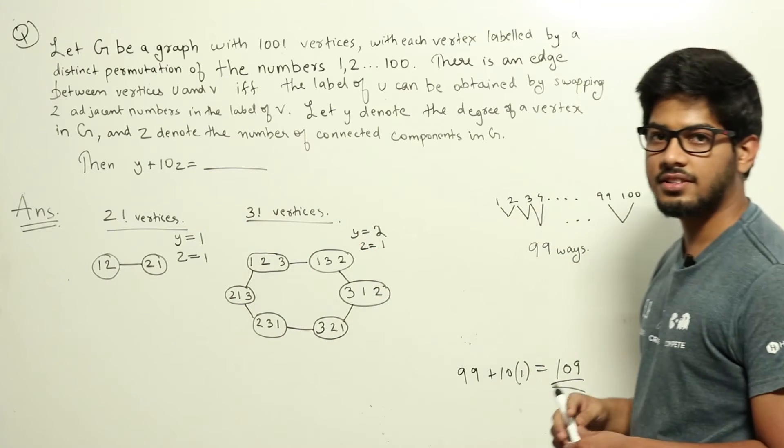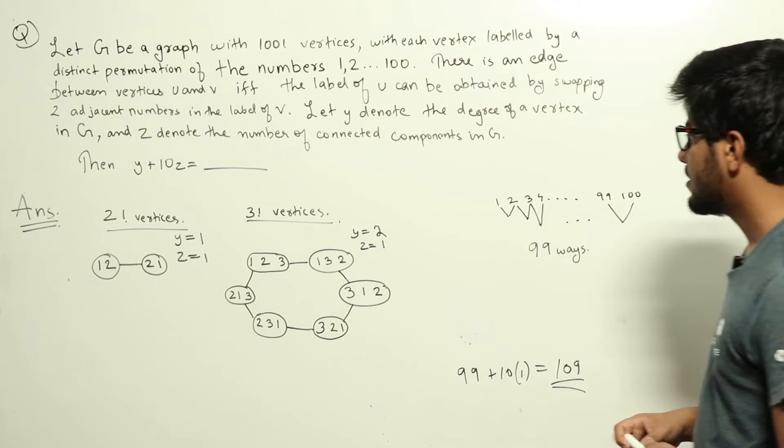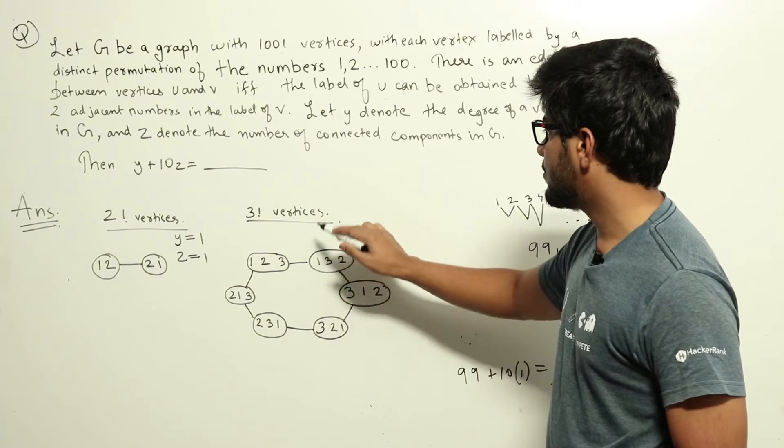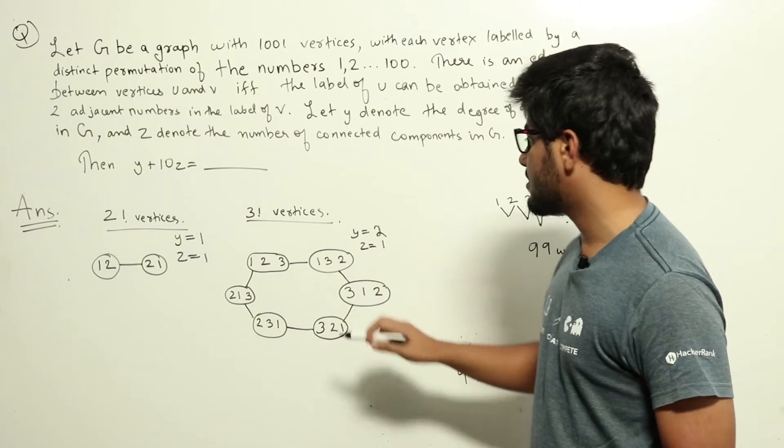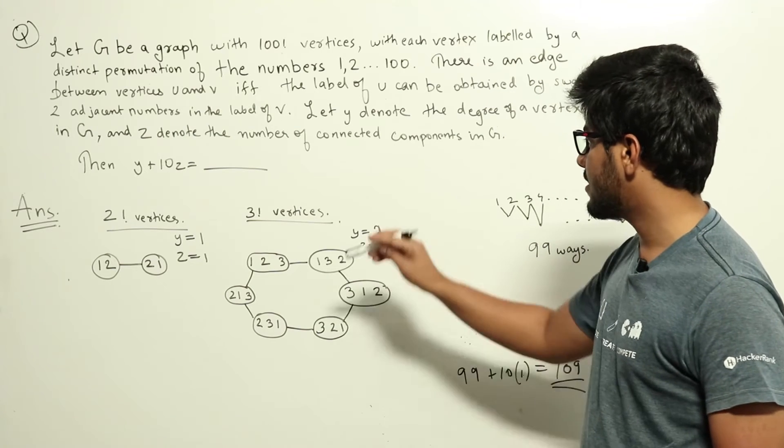3 factorial is 6. So there will be six vertices for this graph and those will be given as 1, 2, 3, 1, 3, 2, etc. These are the six vertices. Now let's try drawing edges.